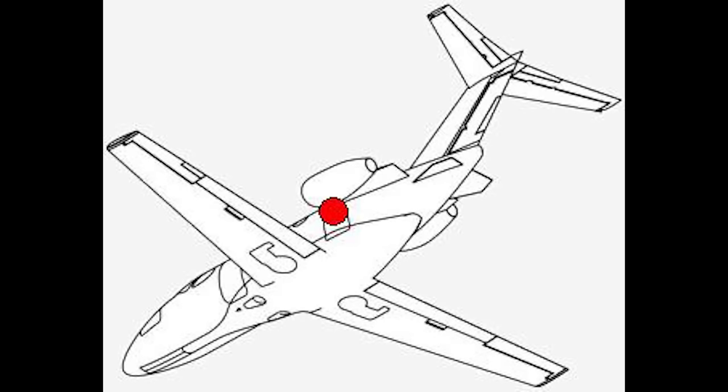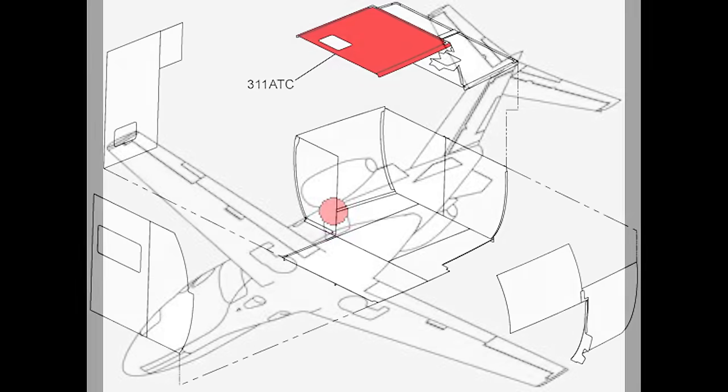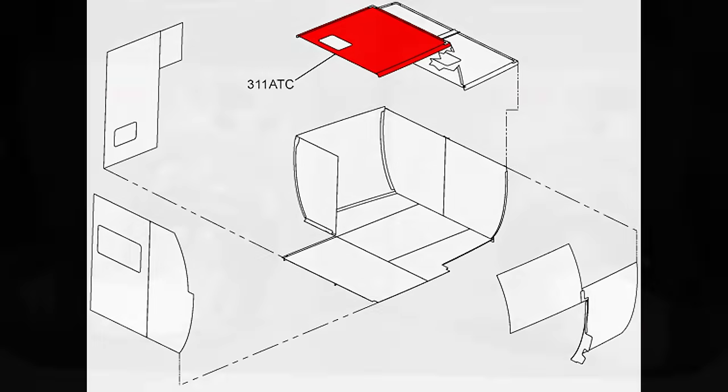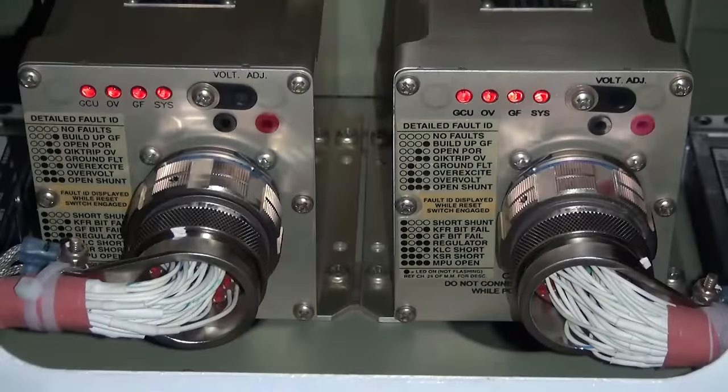The GCUs are located above the aft baggage compartment. Unlatch the butterfly nuts on the drop-down panel 3-1-1-Alpha-Tango-Charlie to view the GCU fault code lights.